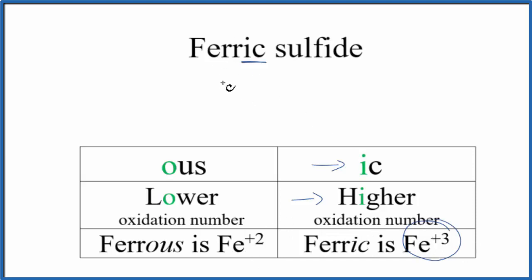With ferric, we're going to have Fe³⁺, and then the sulfur will be 2⁻. So we know for Fe we'll have +3, and then sulfur will be -2.